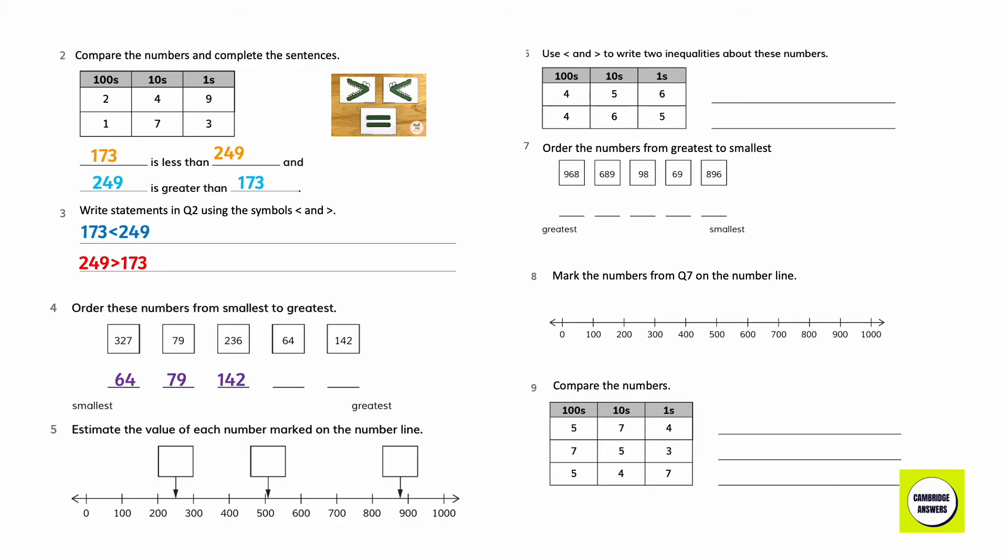Order these numbers from smallest to greatest. 64, 79, 142, 236, 327. Estimate the value of each number marked on the number line: 250, 510, 880.